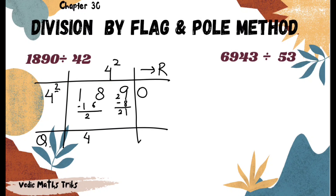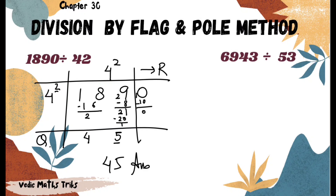29 minus 8 gives 21, so the next divisor is 21. We divide 21 by 4: it goes 5 times (4×5=20), leaving a remainder of 1. We write 1 over the next digit, making 10. Then we multiply 5 by the flag: 5×2=10, and subtract 10, giving 0. The final answer is 45.